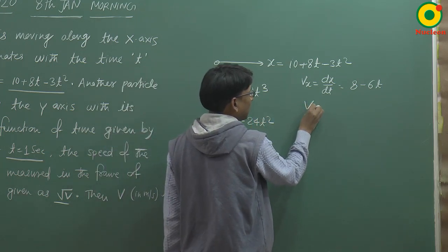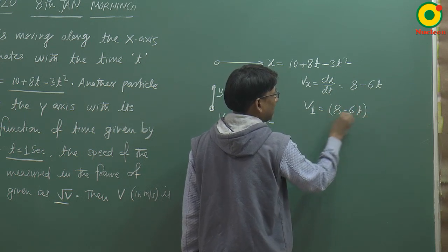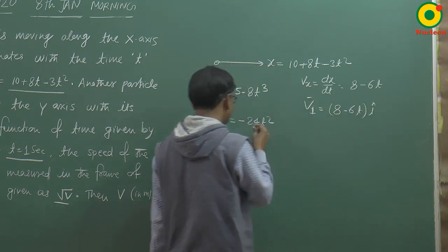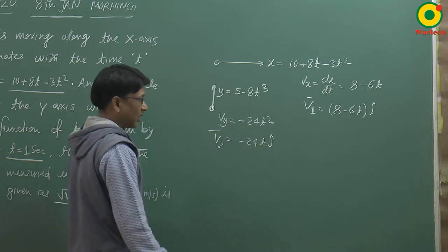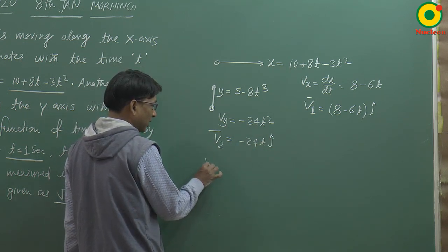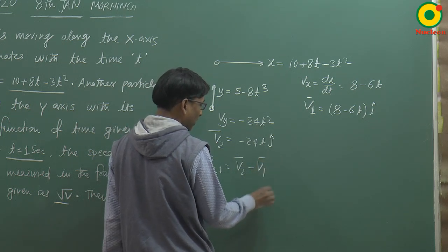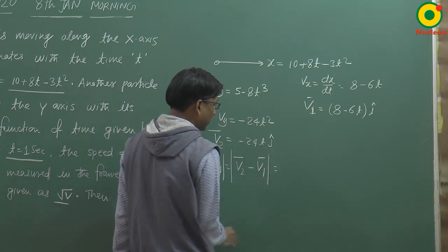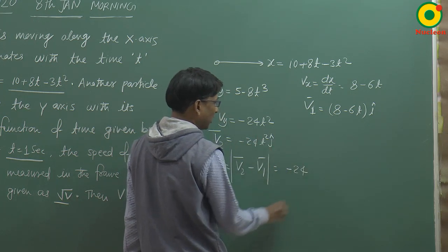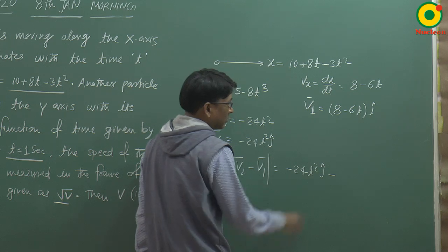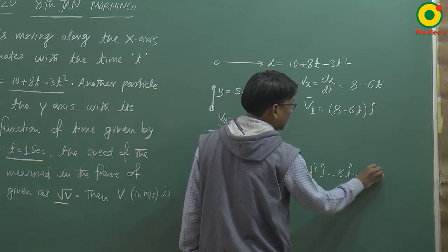पहले particle की velocity x-direction में: v₁ = (8 - 6t) î। Particle 2 की velocity y-direction में: v₂ = -24t² ĵ। अगर relative velocity पूछा गया है, तो velocity of 2 with respect to 1 = velocity of 2 minus velocity of 1। तो v₂ - v₁ = -24t² ĵ - (8 - 6t) î।